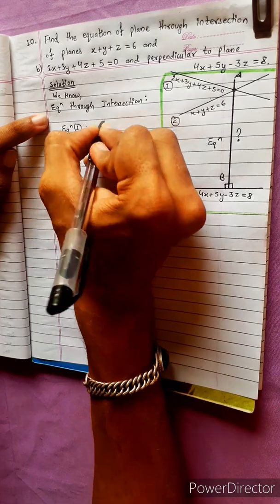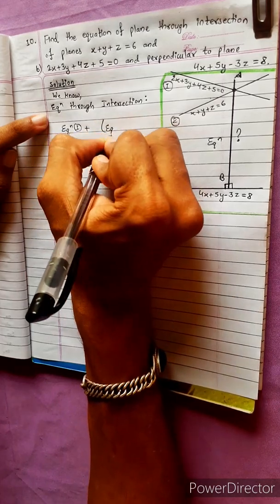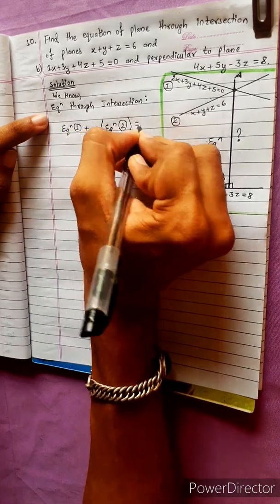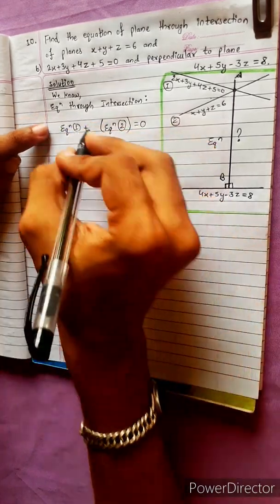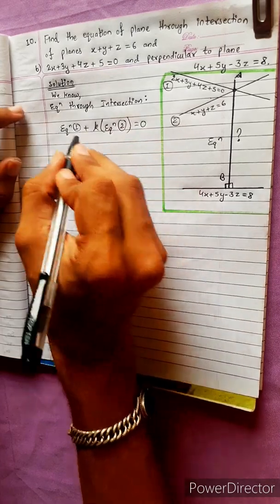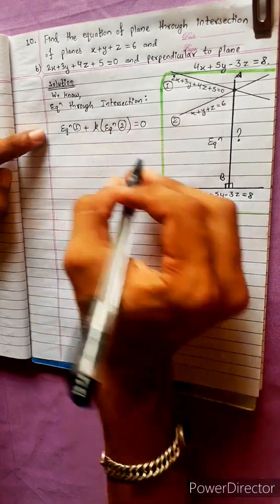The equation takes the form: 1 plus some constant, equal to 0. Using the formula with constant k.